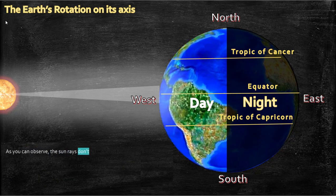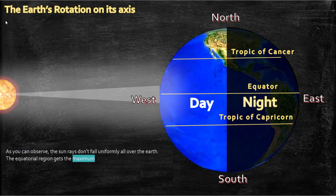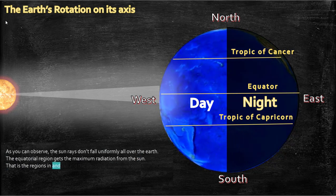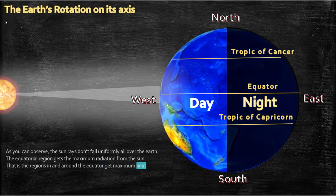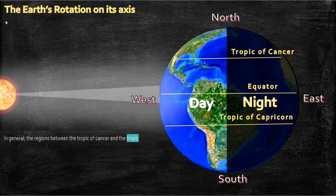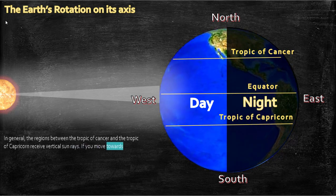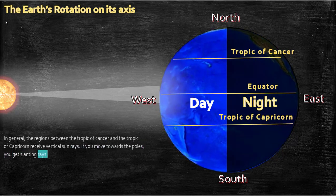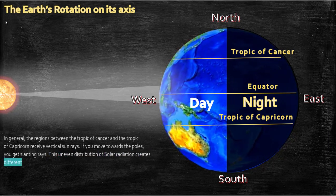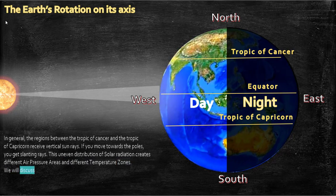As you can observe, the sun rays don't fall uniformly all over the earth. The equatorial region gets the maximum radiation from the sun — the regions in and around the equator get maximum heat and light. In general, the regions between the Tropic of Cancer and the Tropic of Capricorn receive vertical sun rays. If you move towards the poles, you get slanting rays. This uneven distribution of solar radiation creates different air pressure areas and different temperature zones.